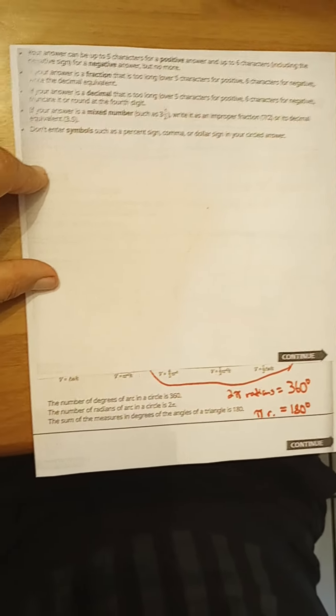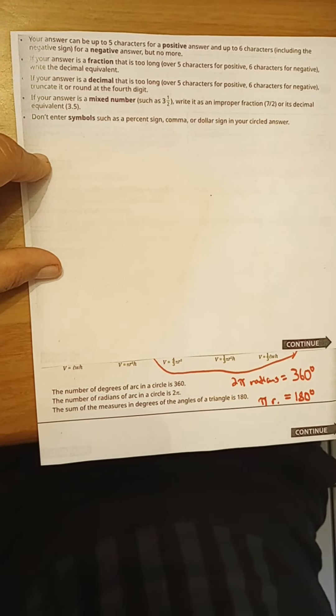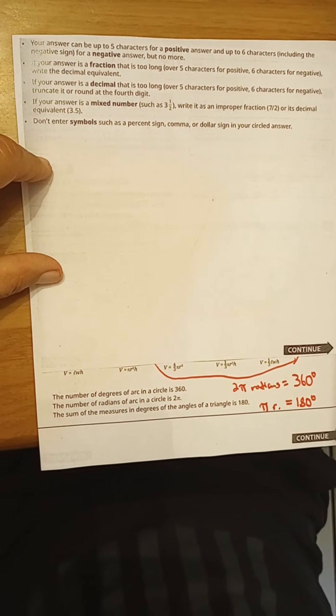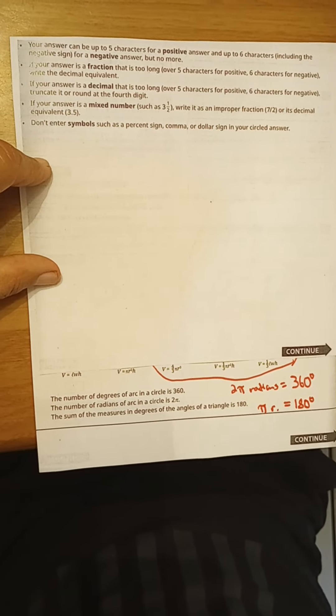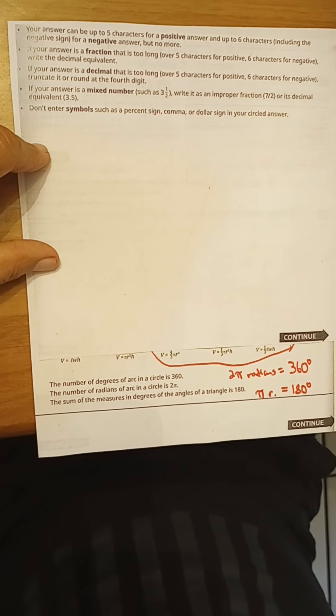Super important: if your answer is a mixed number, such as three and a half, you need to write it as an improper fraction, which is seven halves, or as a decimal—simply divide seven by two, and you'd get 3.5.